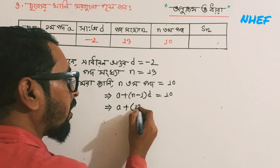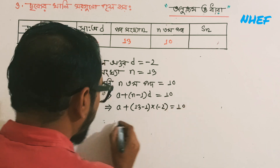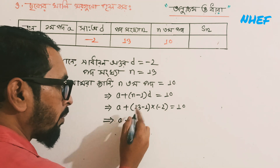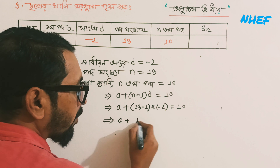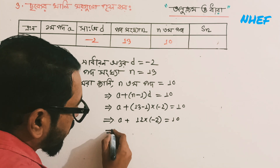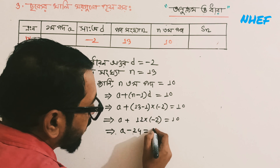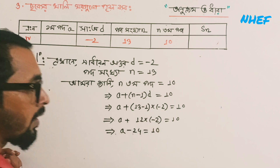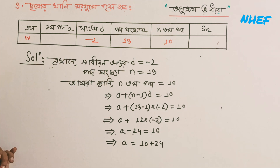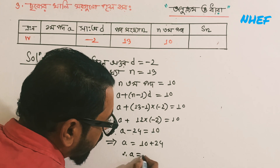That is 13 minus 1, d is minus 2. So we can write a plus 24 is equal to 10, so a is equal to 10 minus 24, a is equal to 34.